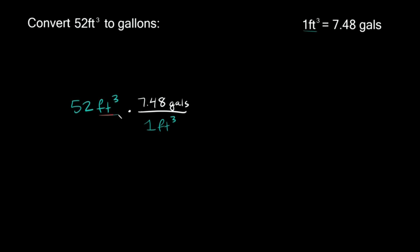Now the reason you want the same units on opposite sides is so now they can cancel out. So we have cubic feet on top and the bottom so now those cancel out.